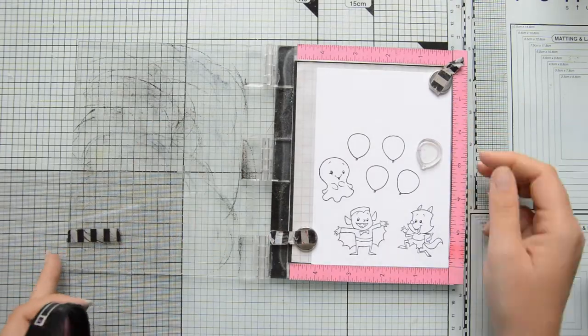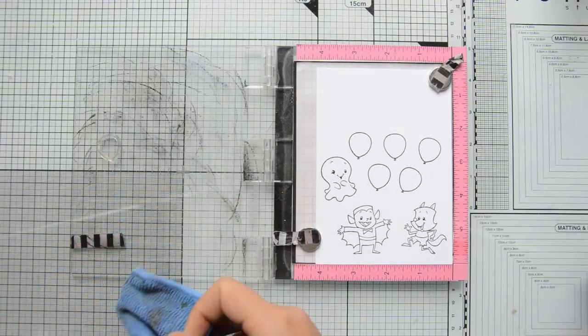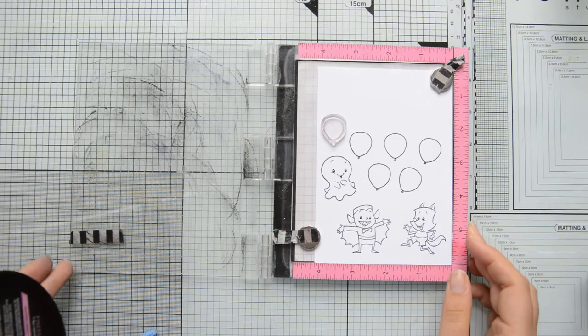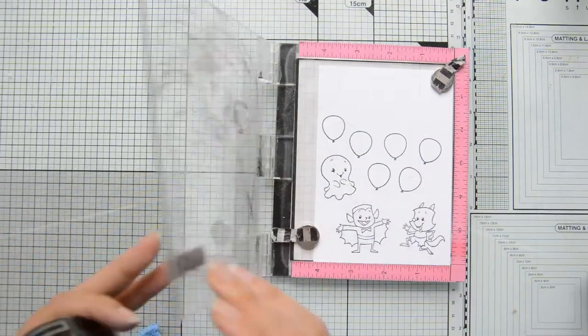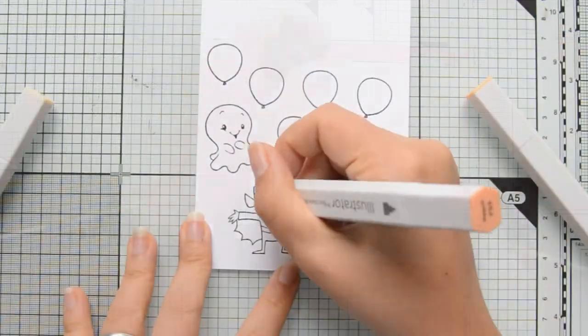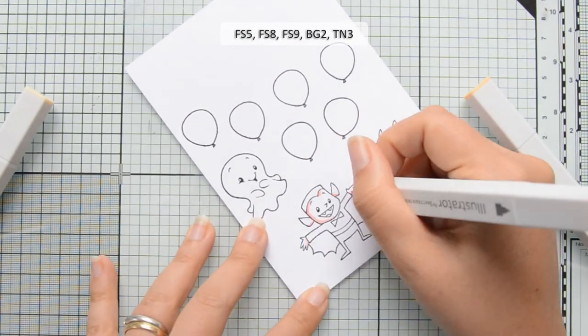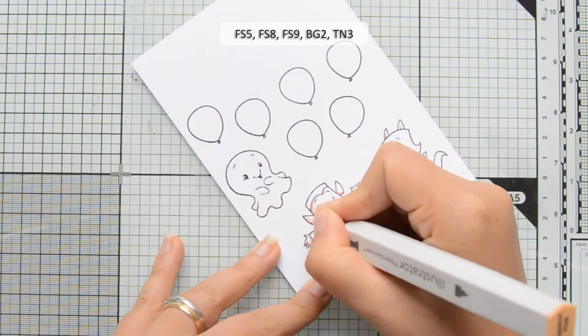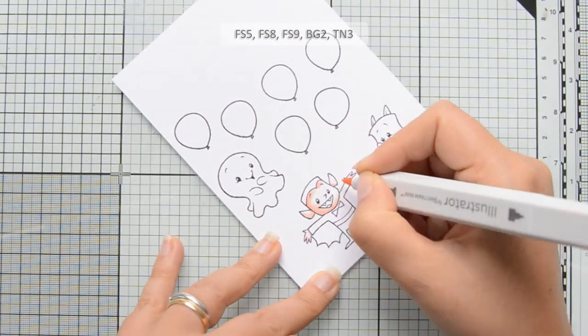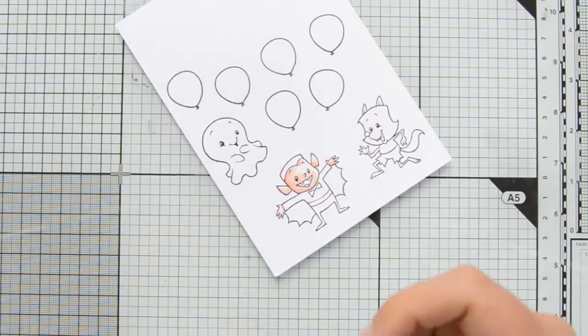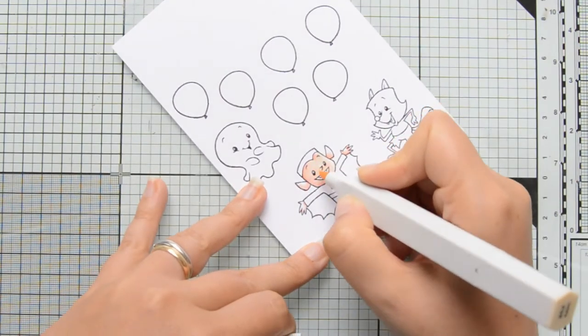This is something that's really quick and easy to do when using a stamping tool like the Mini MISTI that I'm using right now. For my coloring today, I used my Illustrator markers by Spectrum Noir. These are alcohol-based markers so you can blend them with each other, like I'm showing right now.